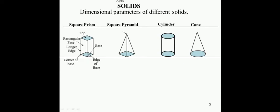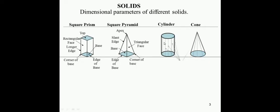For the square pyramid, this is the apex, this is the slant edge, this is the base surface, this is the edge of the base, this is the corner of the base, and this is the triangular face. For cylinder and cone, there are curved surfaces. The imaginary lines which generate the curved surface are called generators. These are the generators of the cylinder and cone.